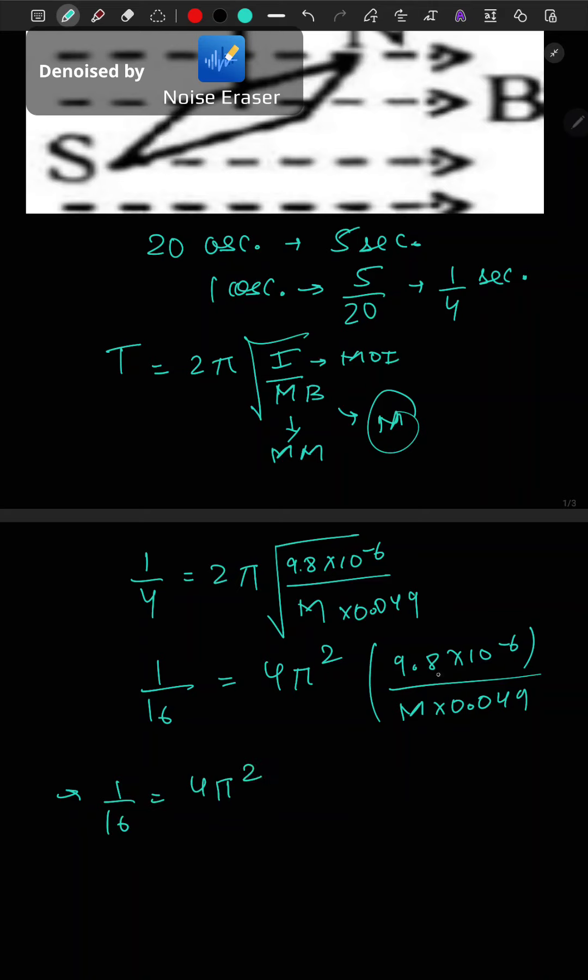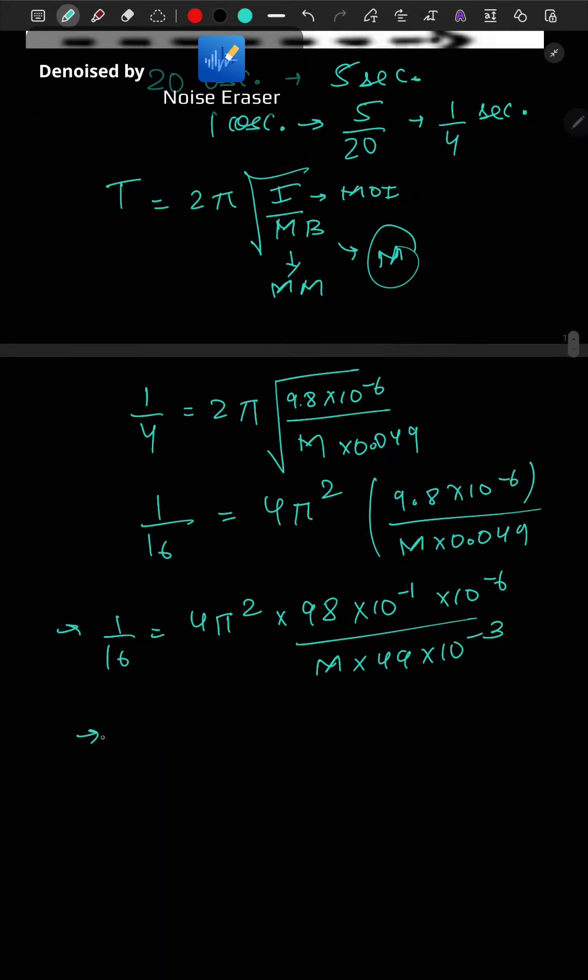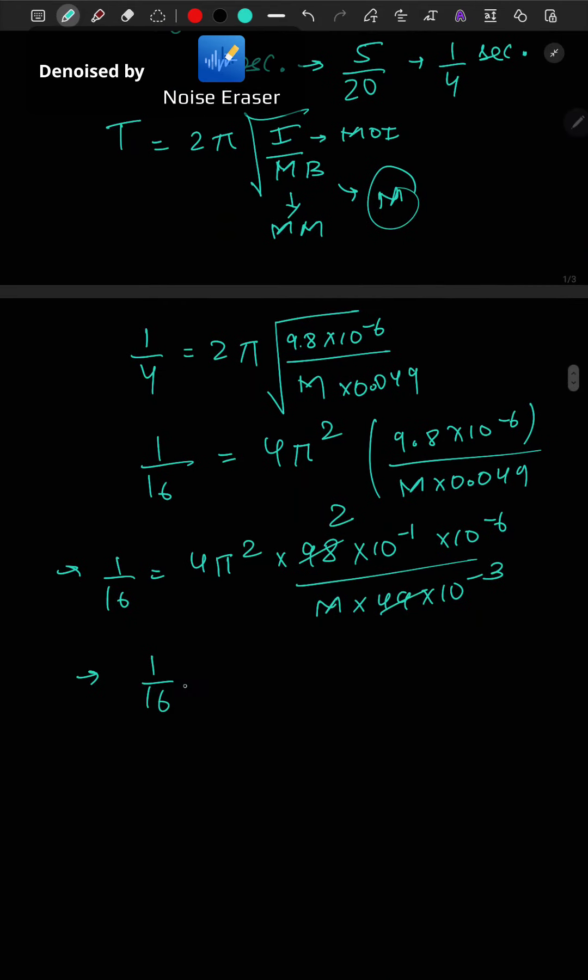Now here 1 by 16 equals 4π². Here 9.8 can also be written as 98 into 10 to the power minus 1 into 10 to the power minus 6, and M into 0.049 into 10 to the power minus 4.